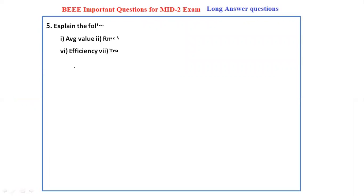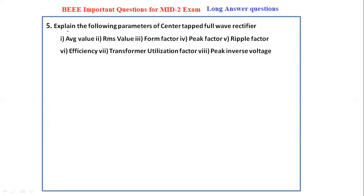Next, explain the following parameters of the center tapped full wave rectifier. You have to explain average value, RMS value, form factor, peak factor, ripple factor, and peak inverse voltage. Next, explain the following parameters of the bridge full wave rectifier: average value, RMS value, form factor, peak factor, ripple factor, efficiency, transformer utilization factor, and peak inverse voltage. For these parameter questions, no need to explain the circuit diagram or waveforms.